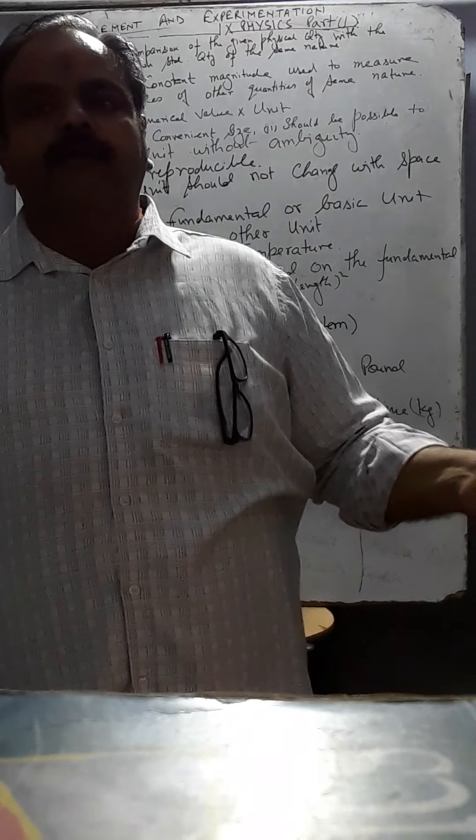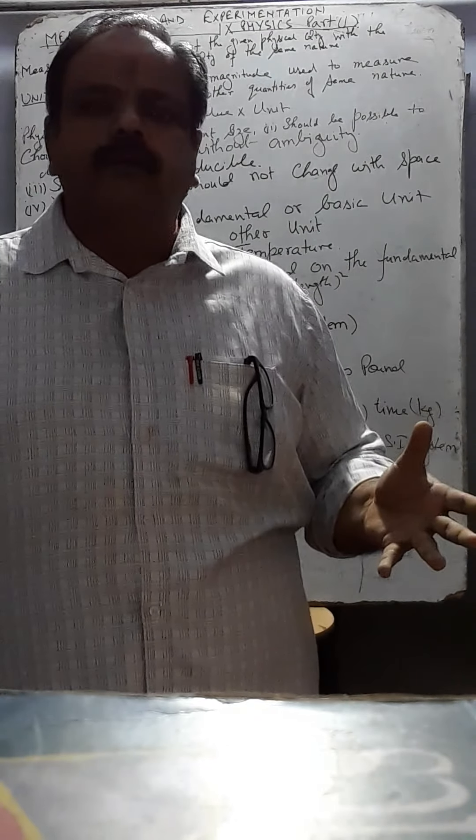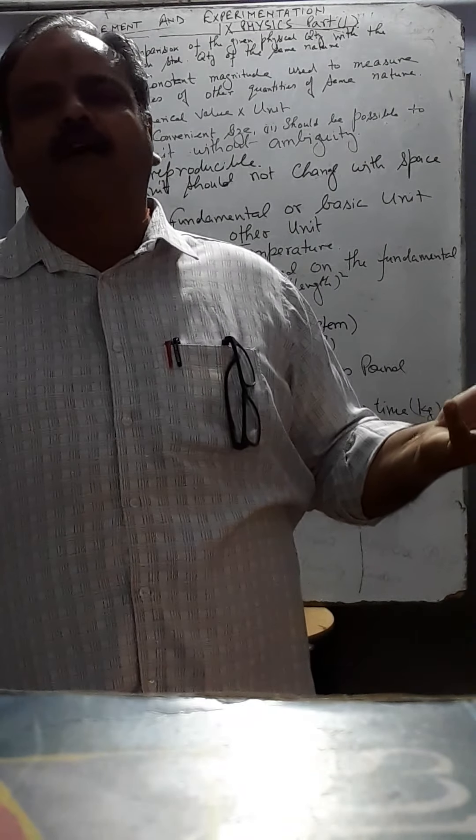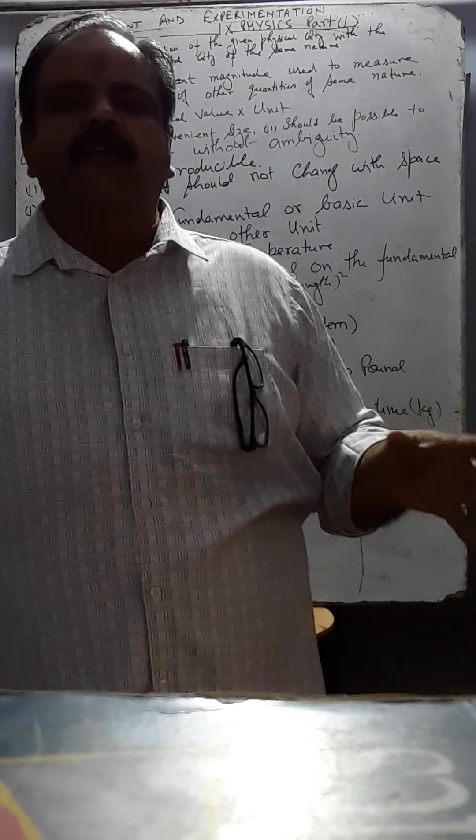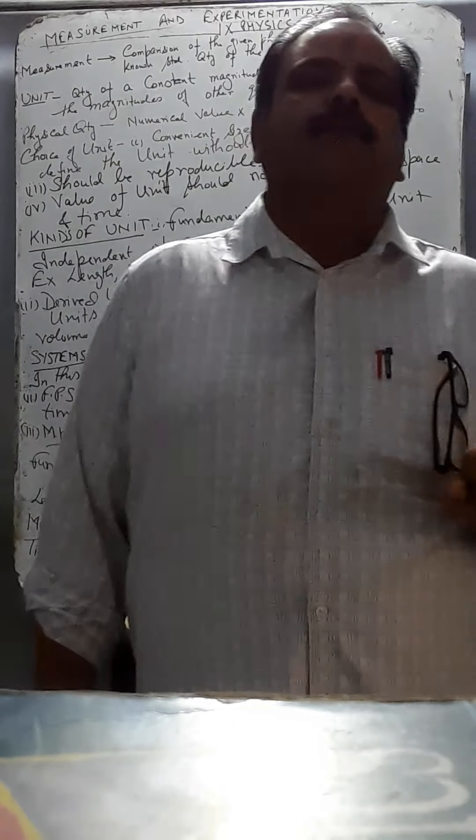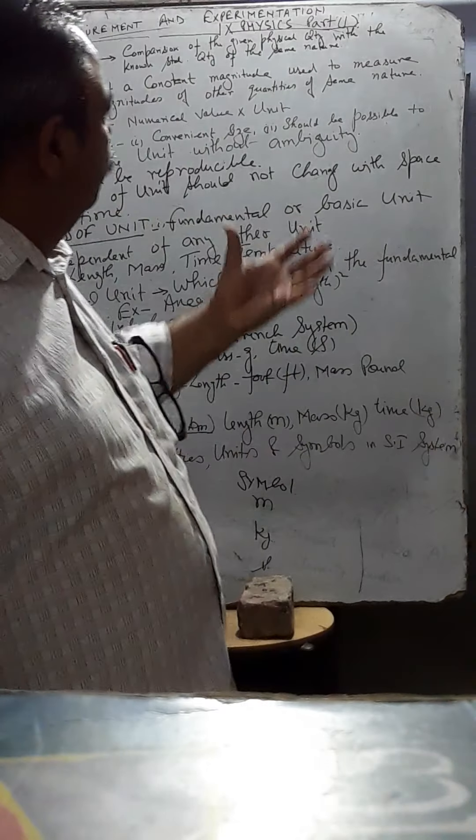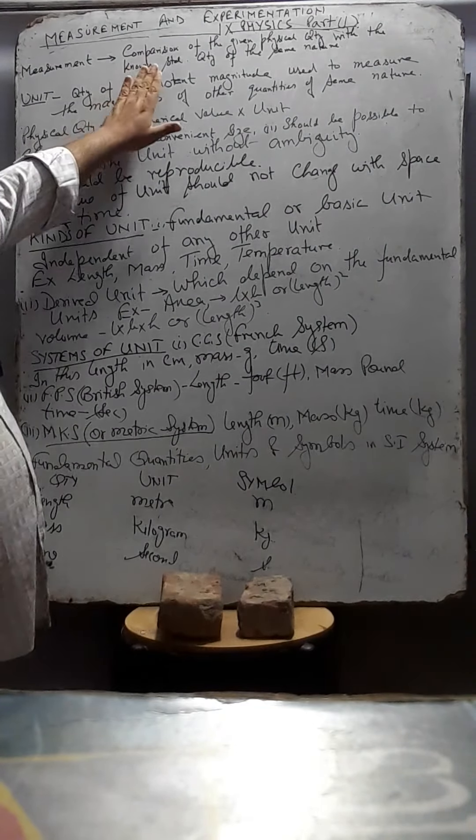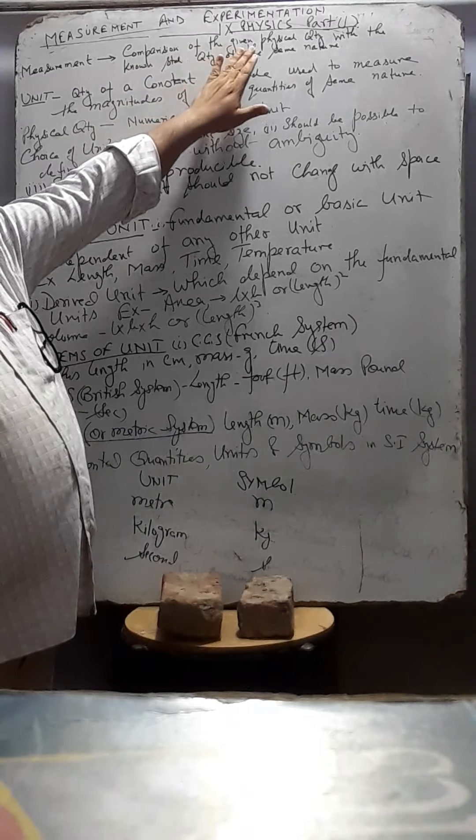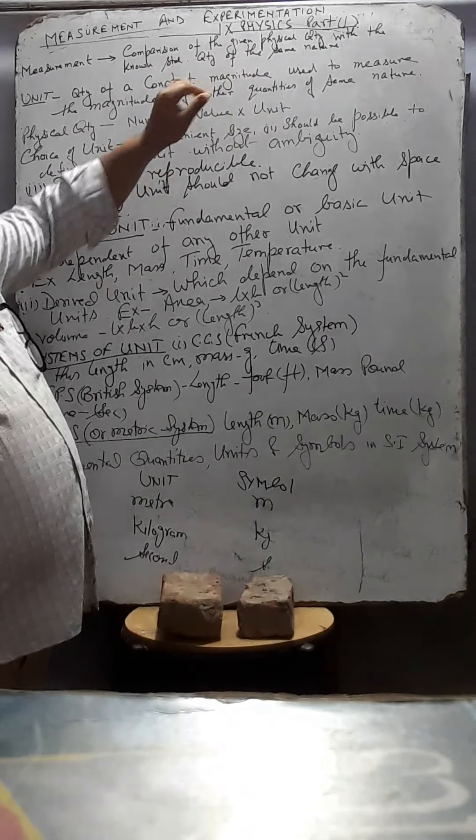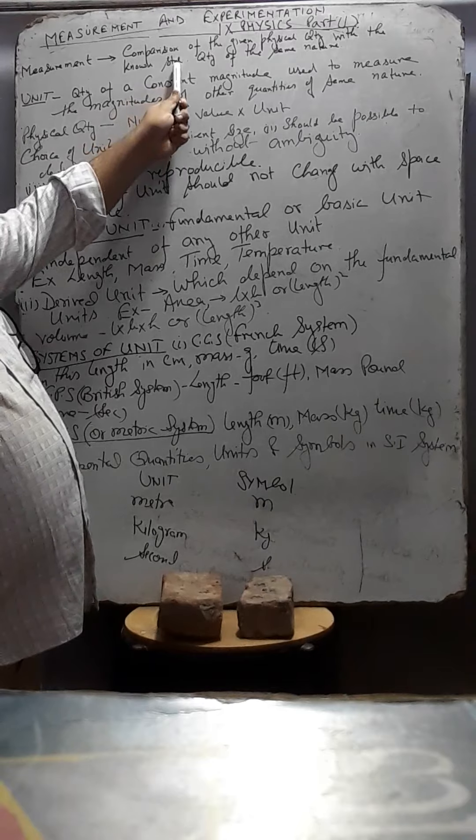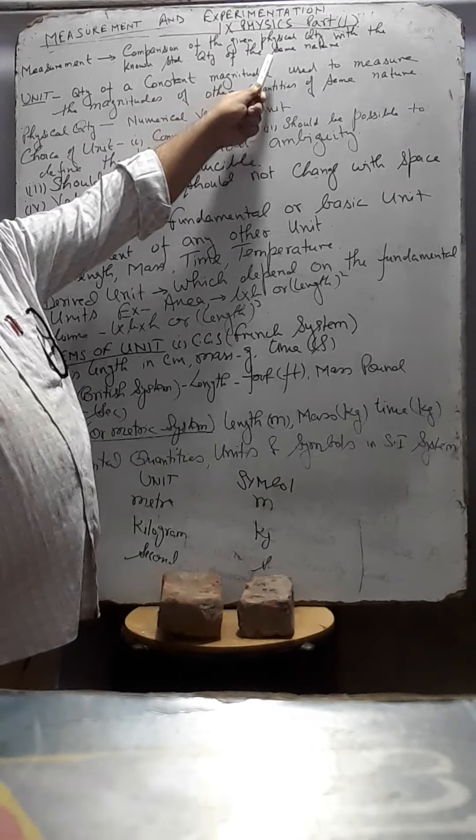But, with the teacher, how much? No answer. How much? No answer. So, this is called estimation. This is different from the measurement. Now, measurement. Now, you come to measurement. The comparison of the given physical quantity with the known standard quantity of the same nature.